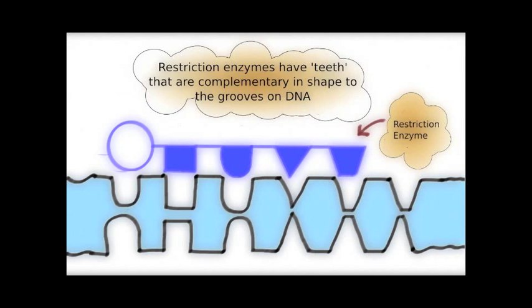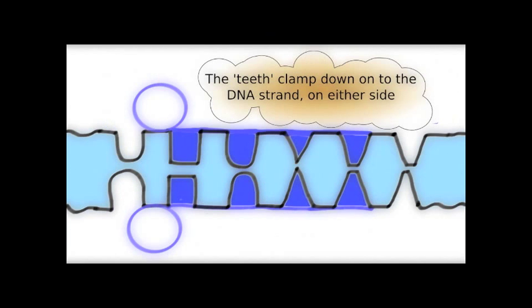A restriction enzyme is made up of proteins, and the surface of the protein is molded to give you teeth-like structures. These teeth-like structures fit onto the grooves on DNA, so they're exactly complementary to the grooves on DNA.